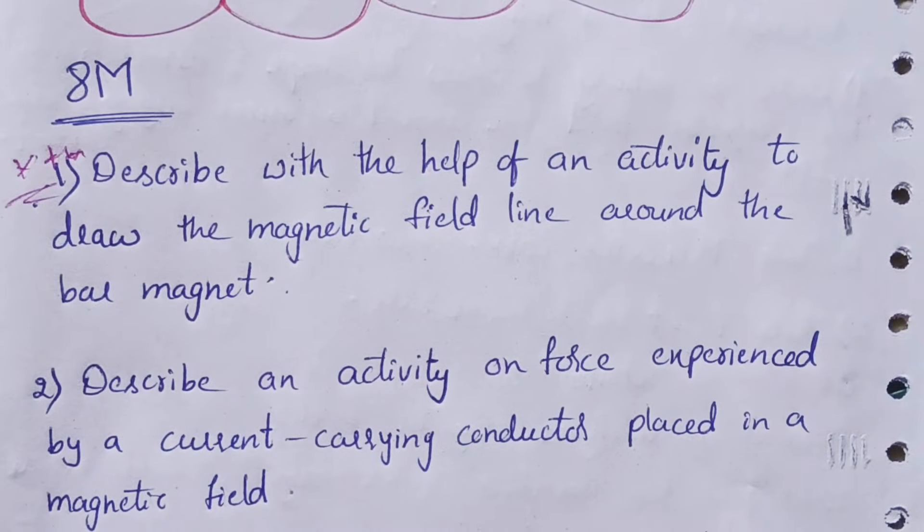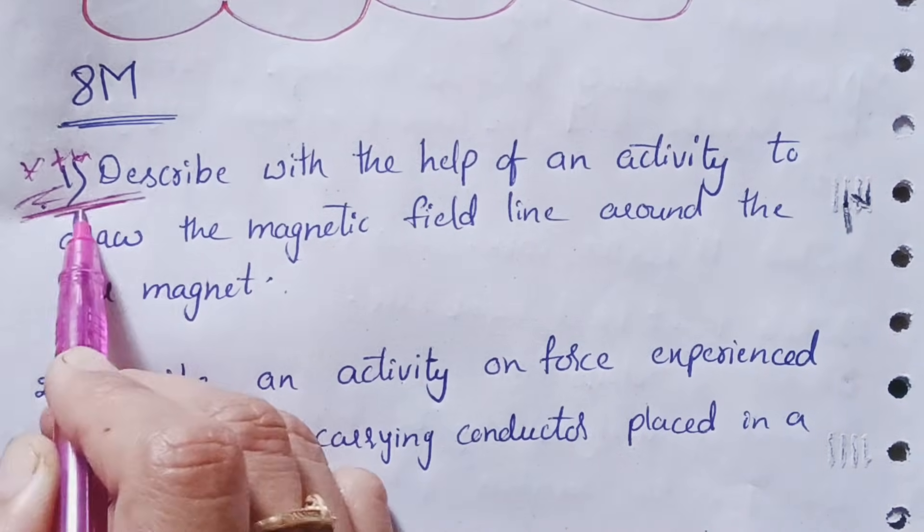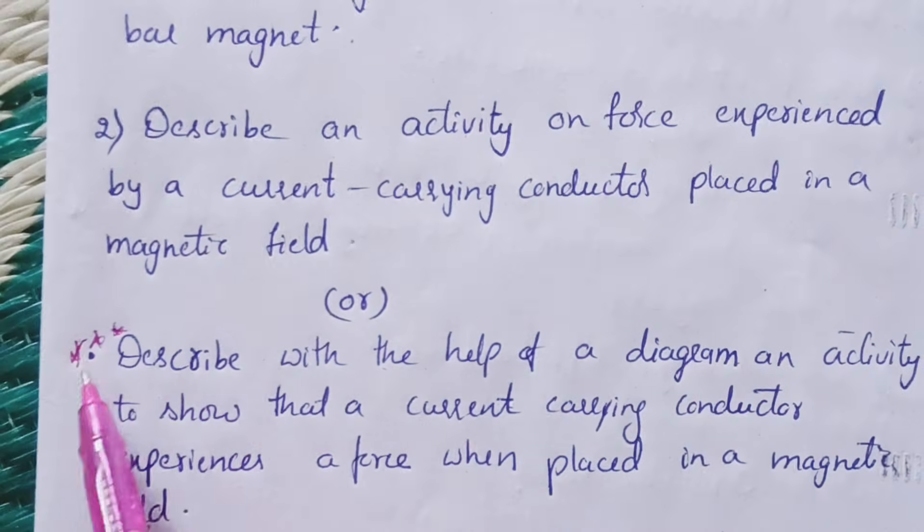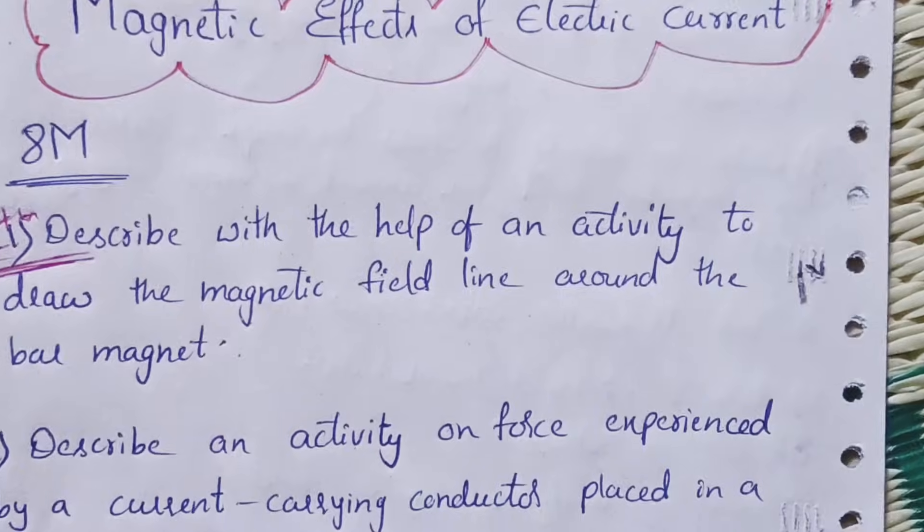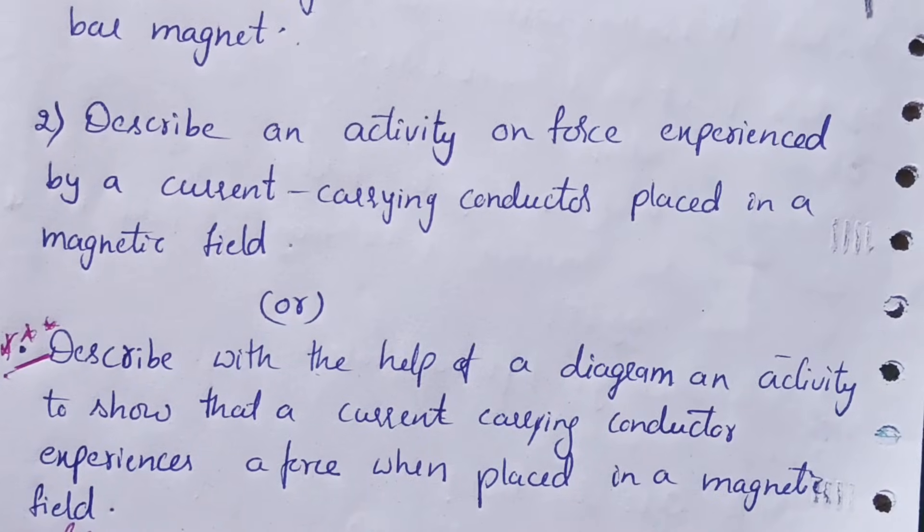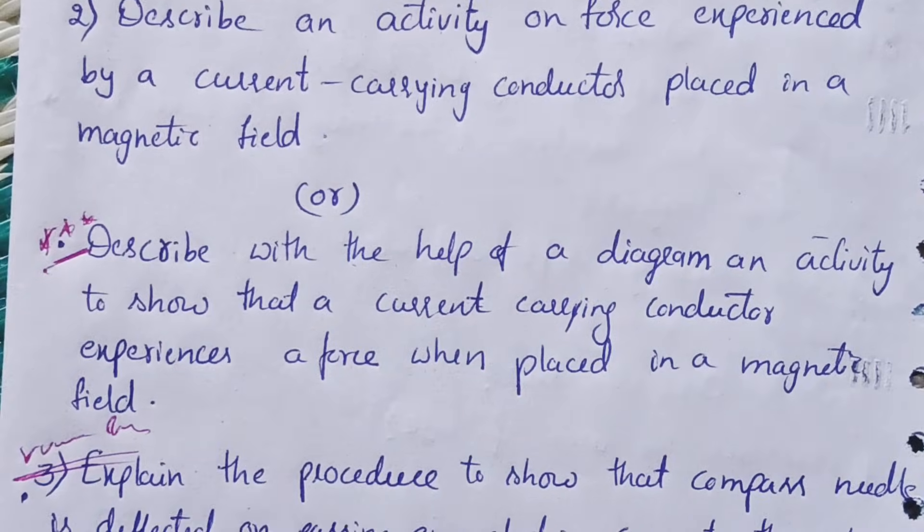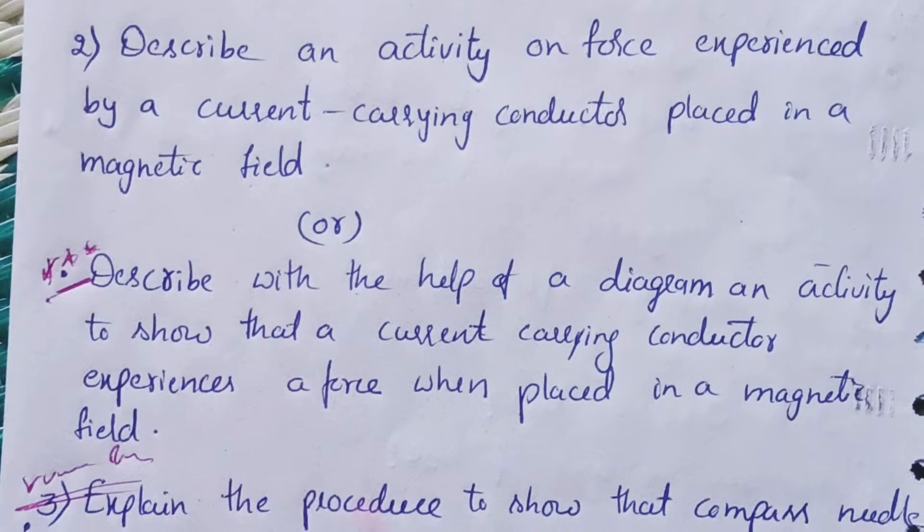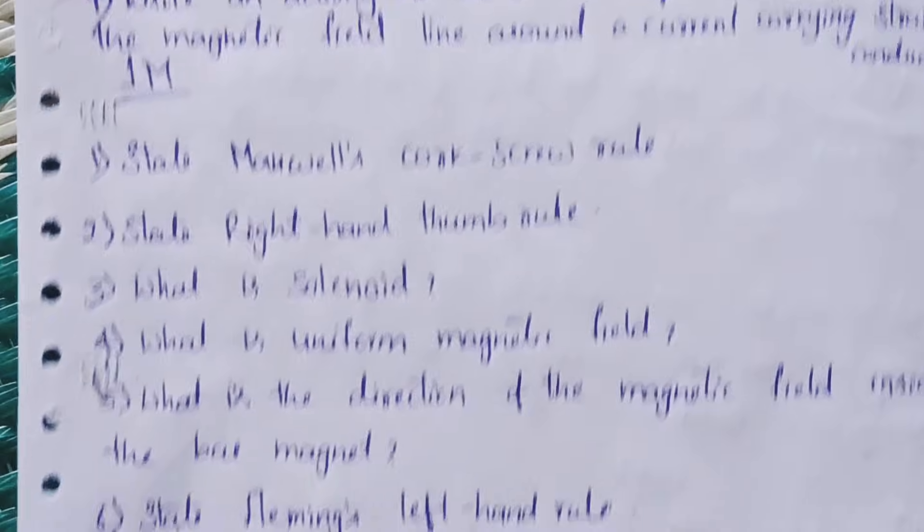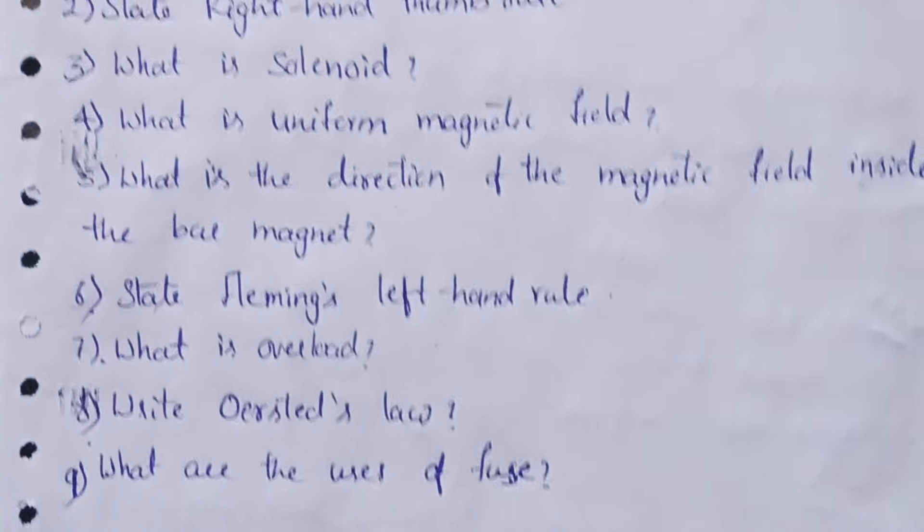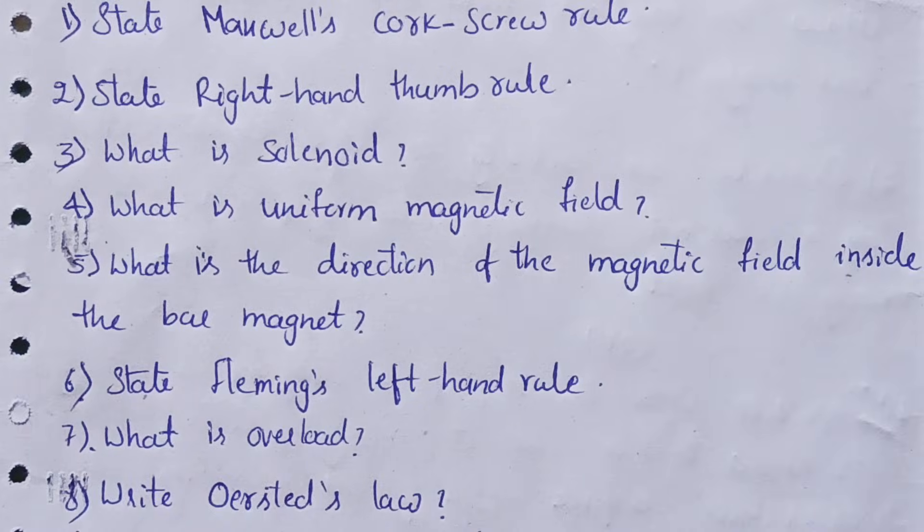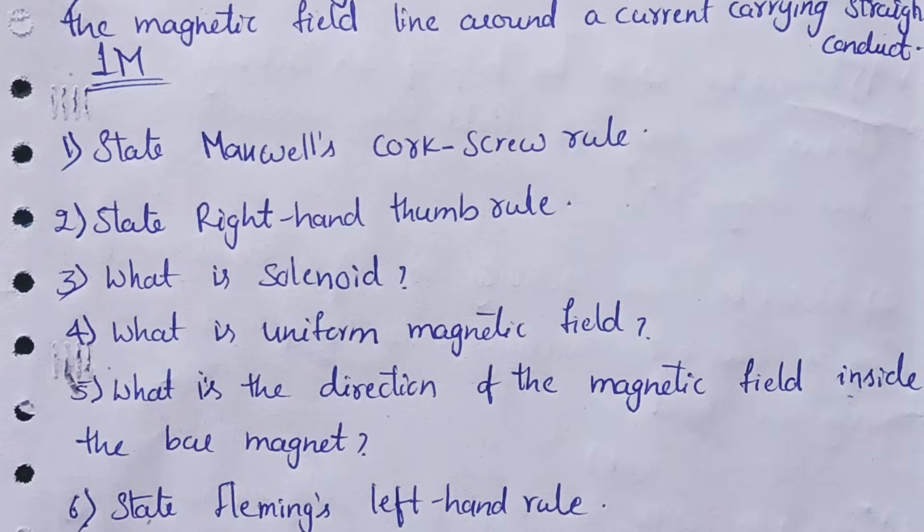So 4 questions are there from this chapter, magnetic effects of electric current. You have to go through this one definitely, and this one, and this one also. These 3 are very most important questions. If you have time just go for this one also. Now we will see the one mark questions from this chapter.